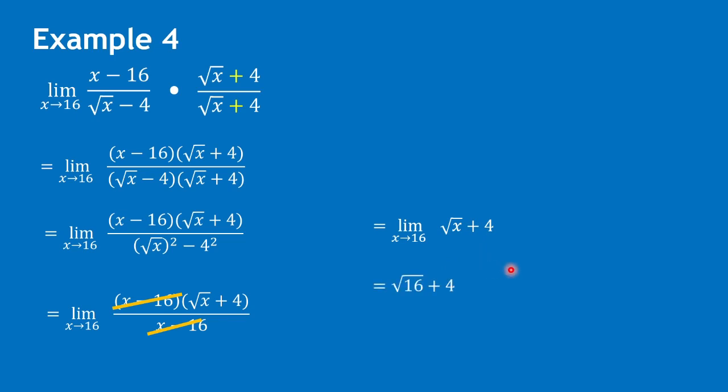By substitution, we can have the square root of 16 plus 4. So we have 4 plus 4, and that would be 8.